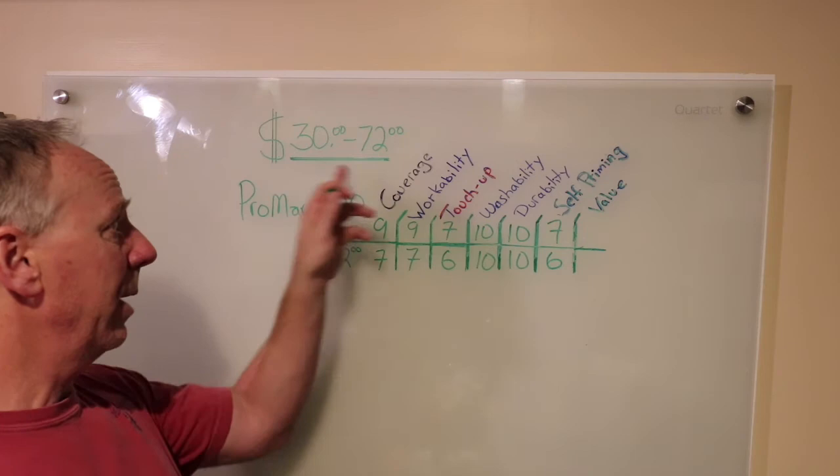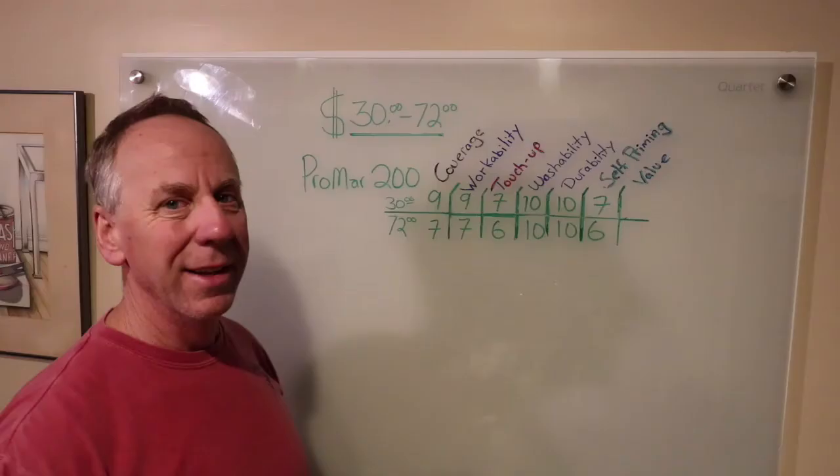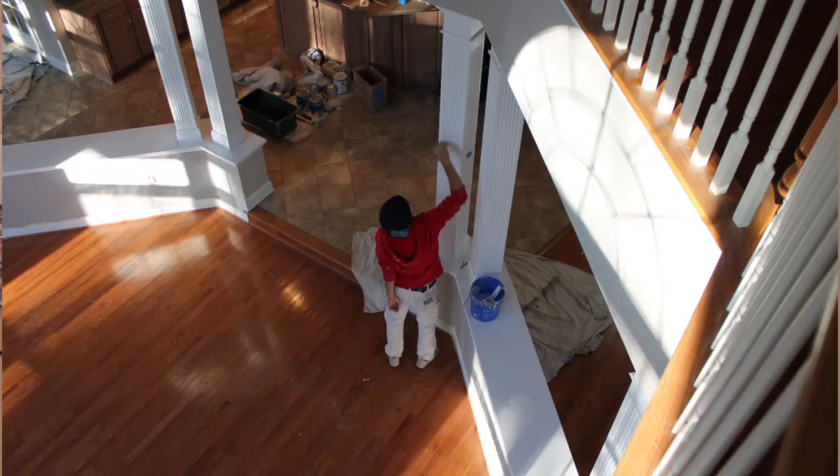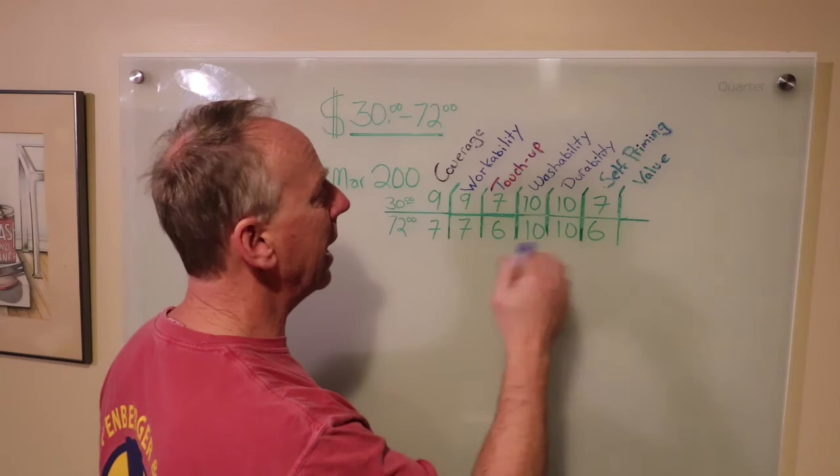So the Promar 200 eggshell, for a contractor price of $30, scores really well. With coverage and workability of a 9, the contractor loves it. With washability and durability of a 10, the customer appreciates that. So that makes this a very good value. I want to give this thing a 9 out of 10 because it isn't self-priming and it doesn't touch up. And there are other paints at this price point that do that, but it's still a very good paint.